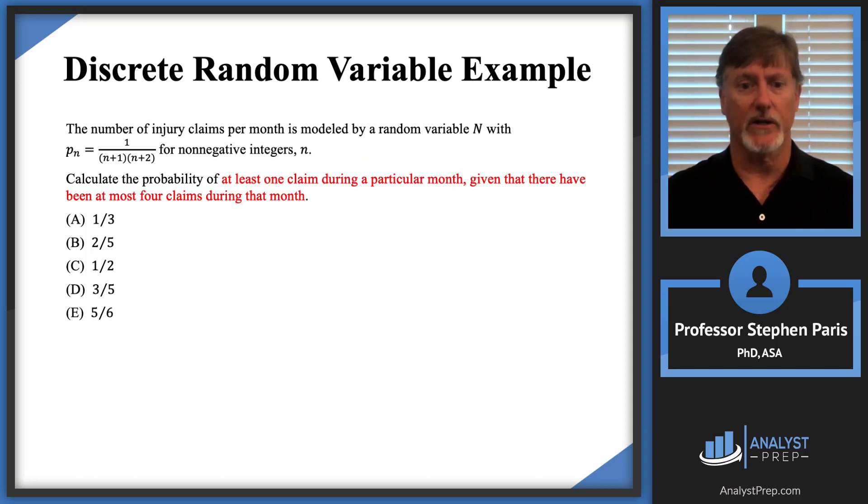Notice that it's the probability that N is at least one claim, so N ≥ 1, given—this is a conditional probability—given that N is at most four claims, which would be N ≤ 4. So it's just a conditional probability that I'm asked to calculate.